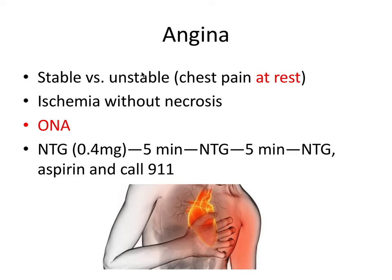Next is angina — chest pain resulting from the coronary arteries not being able to provide enough oxygenated blood to the heart tissue. There are two main forms: stable angina, where symptoms are caused by a stimulus like exercise or stress, and unstable angina, where chest pain is less predictable and can occur even at rest. Angina is ischemia without necrosis — the heart is not getting enough oxygenated blood, but fortunately none of the heart cells are dying as a result.